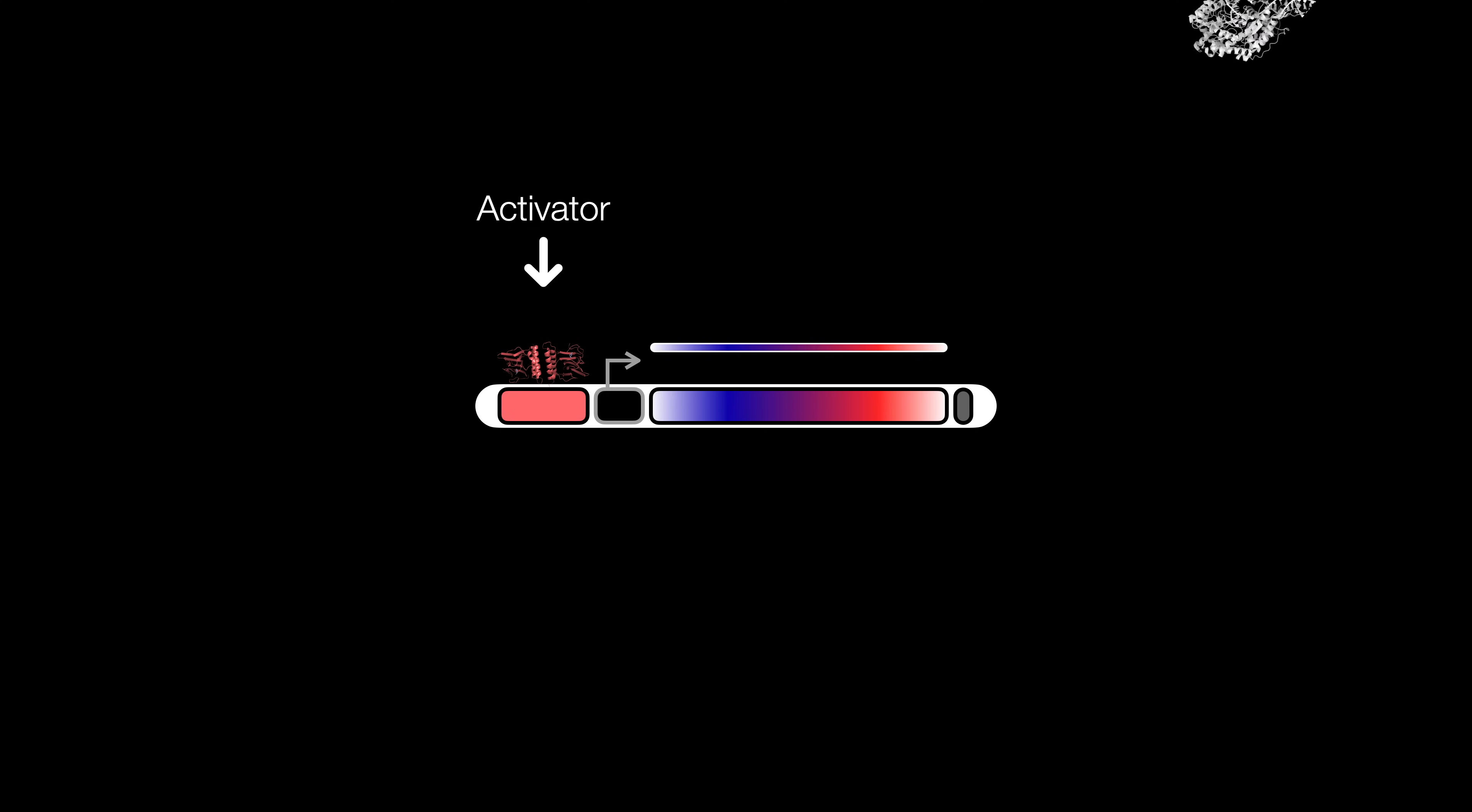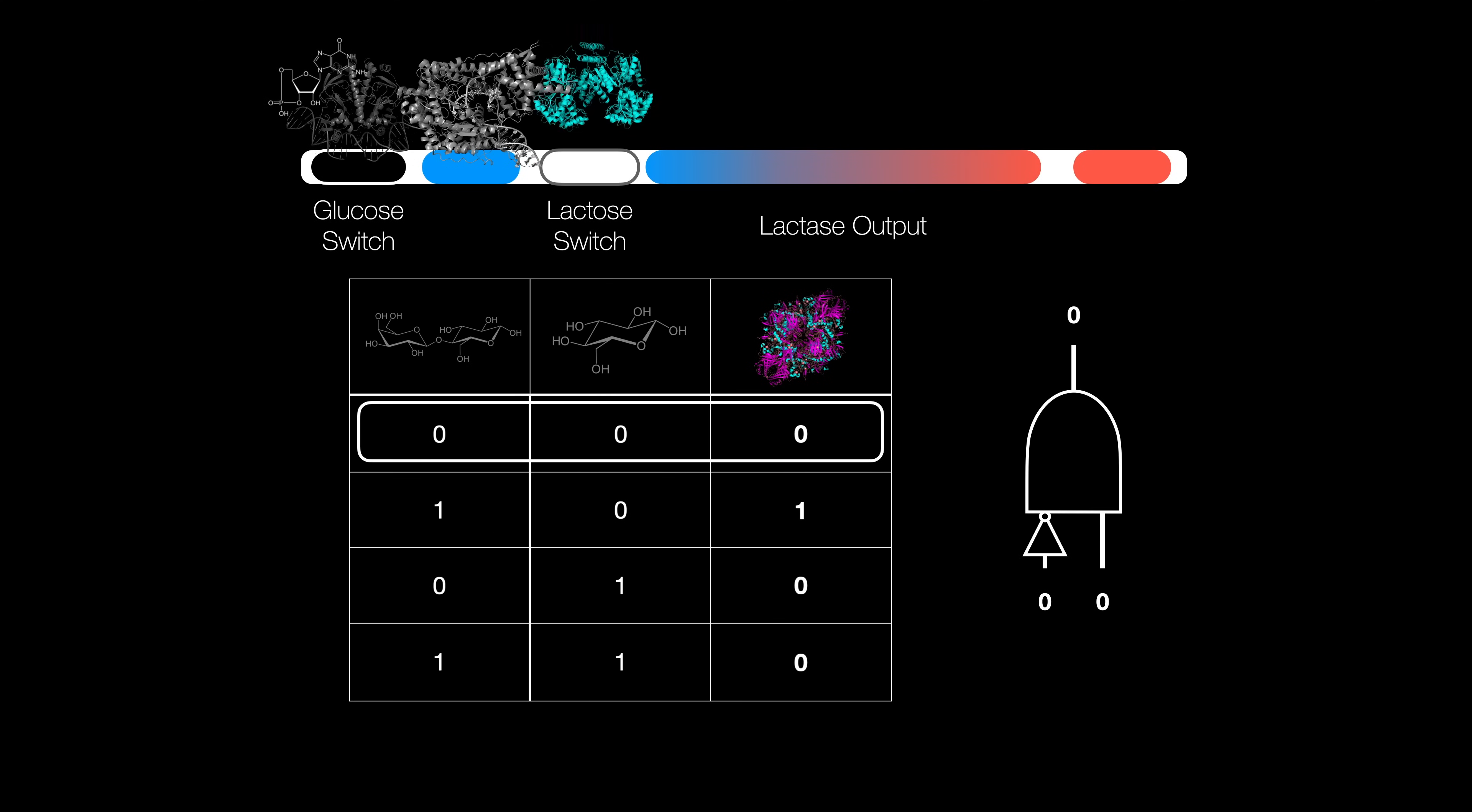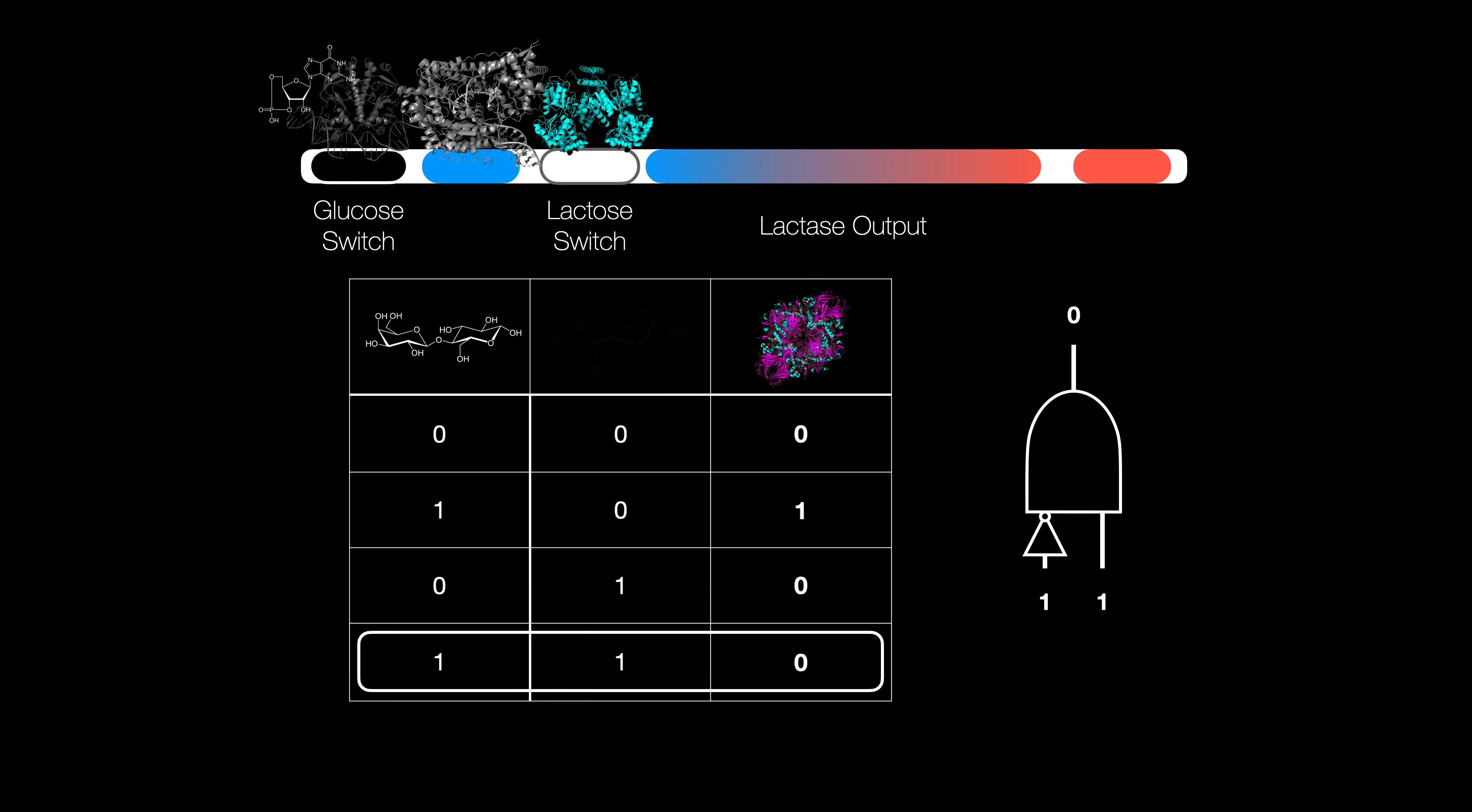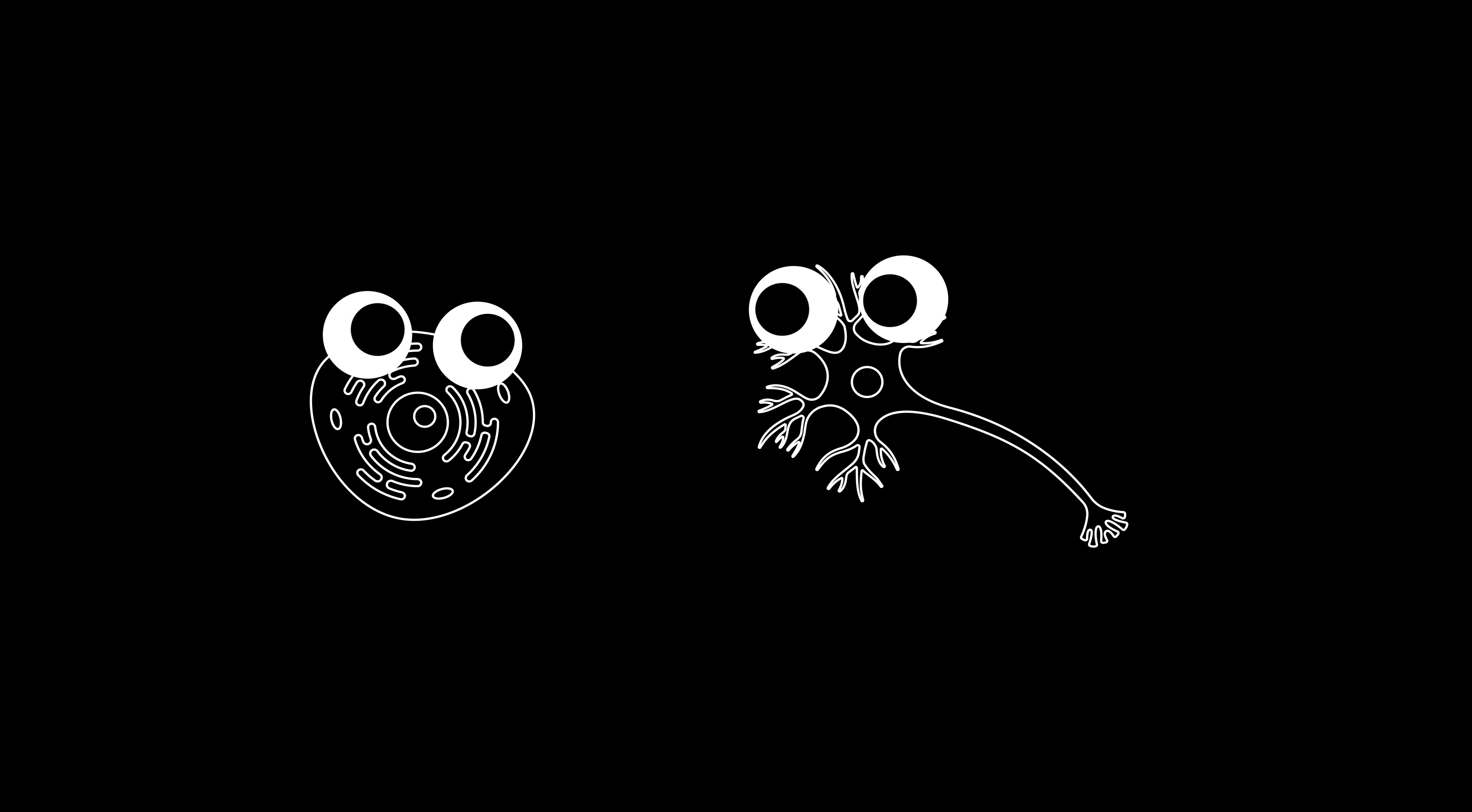And this is the start of decision making in living things. Given an input, you can change how much protein is being produced just like a knob in an analog system. And if you wire enough of them together, you can create complex logical systems that end up being able to decide the fate of cells. This is basically what makes nerve cells different from skin cells, despite sharing the same source code.